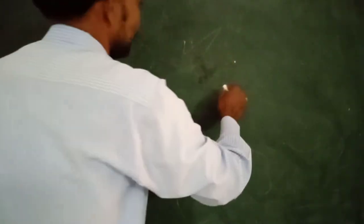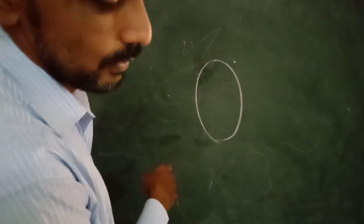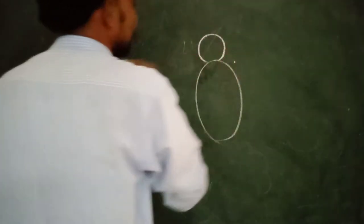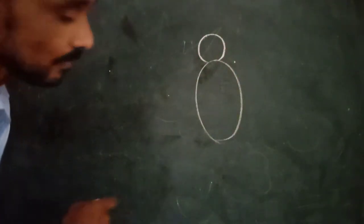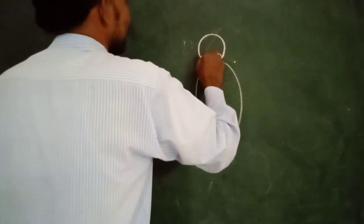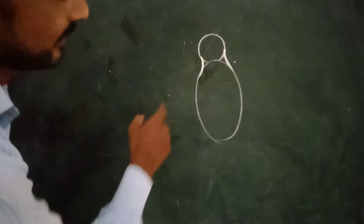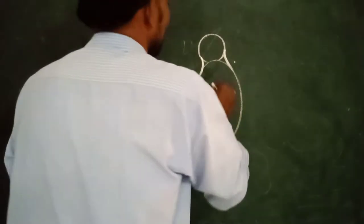Let us learn how to draw this nest. See, look at the moon here. I am going to take one oval shape — this is the standing oval. For this standing oval I am going to add one circle. I added one circle to the oval.